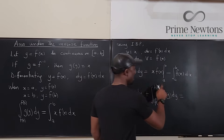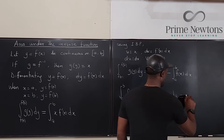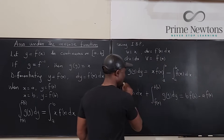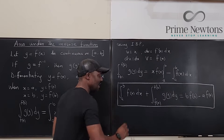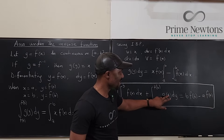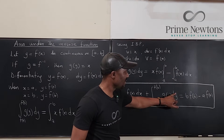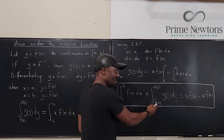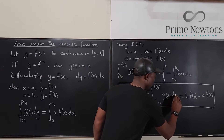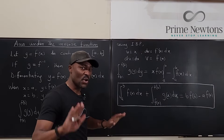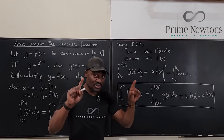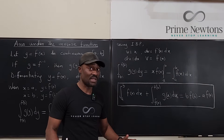...equals b·f(b) minus a·f(a), evaluated by plugging in the bounds. Also, the variable of integration in the inverse integral doesn't matter — we can write it as g(x) dx instead of g(y) dy. This relationship holds as long as differentiability and continuity on that closed interval can be established and g is truly the inverse of f.